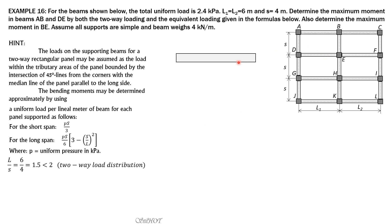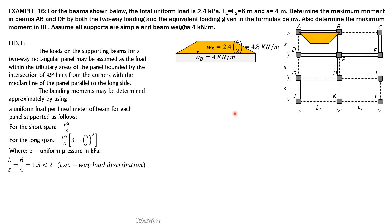In the two-way loading situation, we draw 45-degree lines from the end supports to define the tributary area. For beam AB, the loading situation is trapezoidal, with the beam weight at 4 kN per meter. The length of the triangular portion is S over 2, which is also S over 2 on the other side. The equivalent intensity of this trapezoidal loading equals pressure 2.4 times S over 2, that is 2.4 times 4 over 2, giving 4.8 kN per meter. By symmetry, reaction at A equals reaction at B.